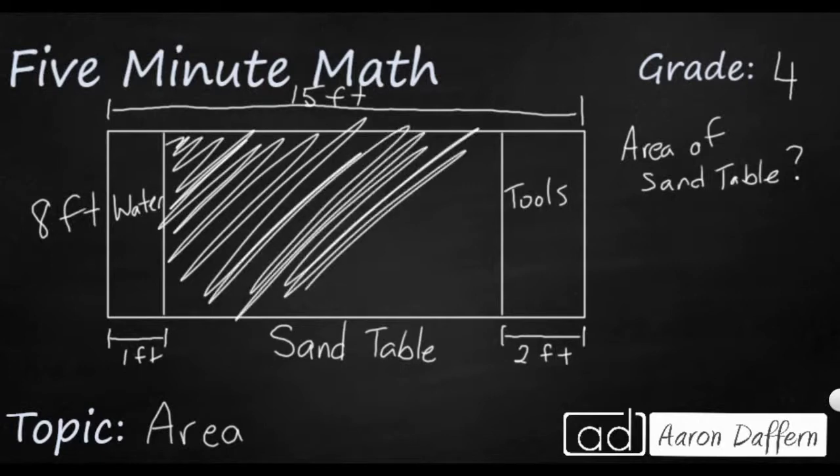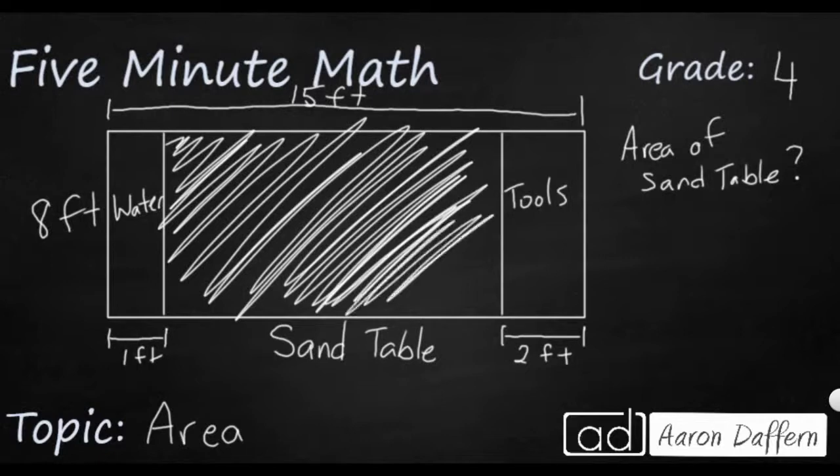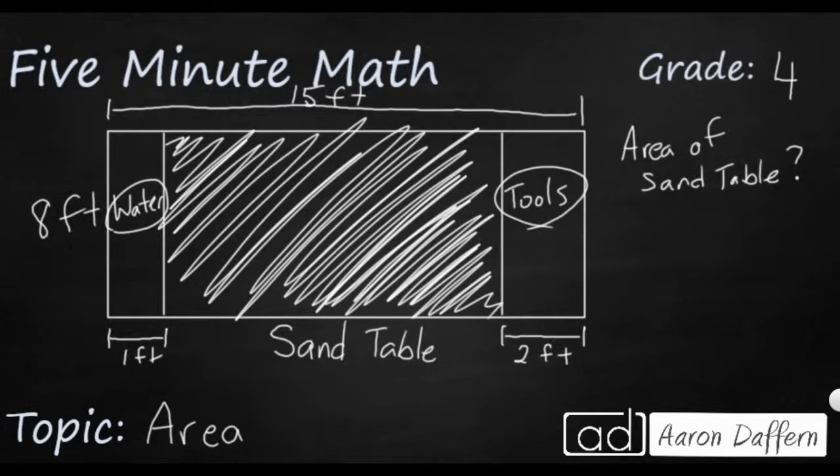And the entire length of the sand table is not 15 feet because this 15 feet includes a little section for tools that's 2 feet and a little section for water that's 1 foot in case you want to make some wet sand castles. So how do we find the area of just this shaded part that I see here? Because we don't know what this length is right here.